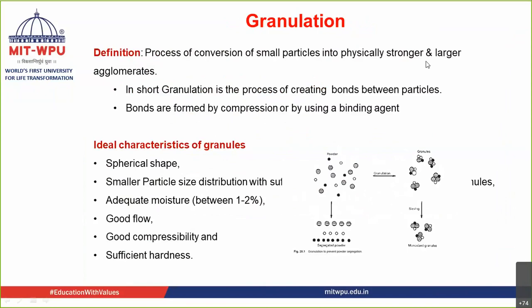If you have powders, the powders are not going to flow very smoothly. Take the example of powdered sugar — piti sakkar as you call it in Marathi — and take the example of granular sugar. Which is going to flow faster? Common sense: the granular sugar is going to flow faster. In a similar manner, granules increase the flowability. Secondly, granules also increase the compressibility and compaction of the tablets.